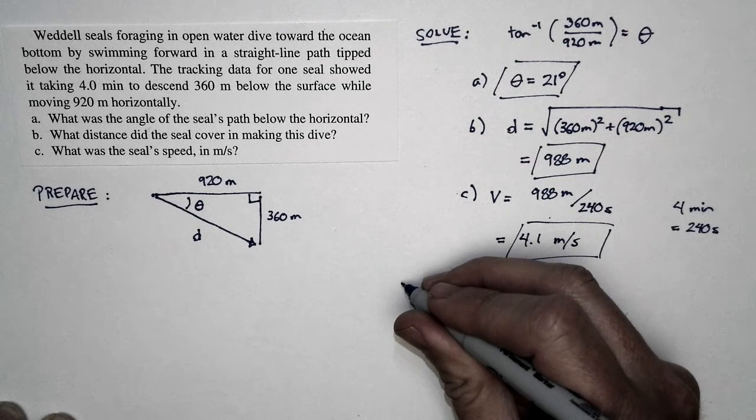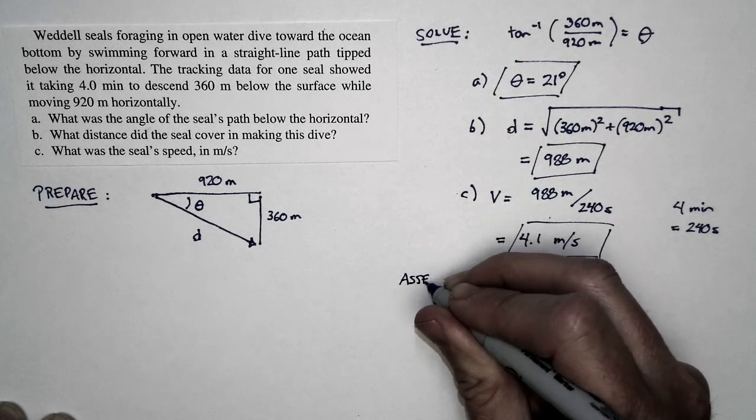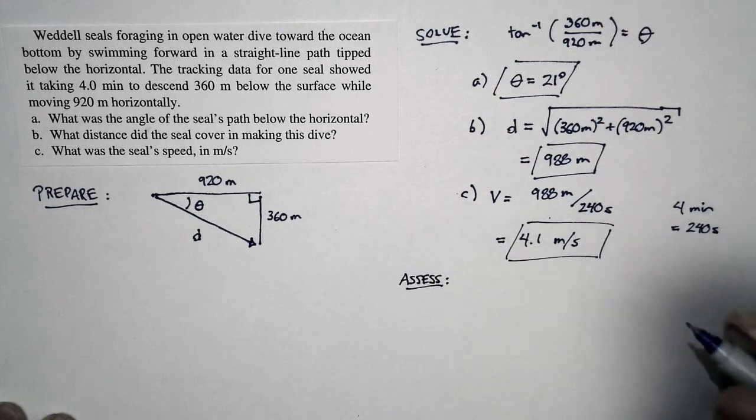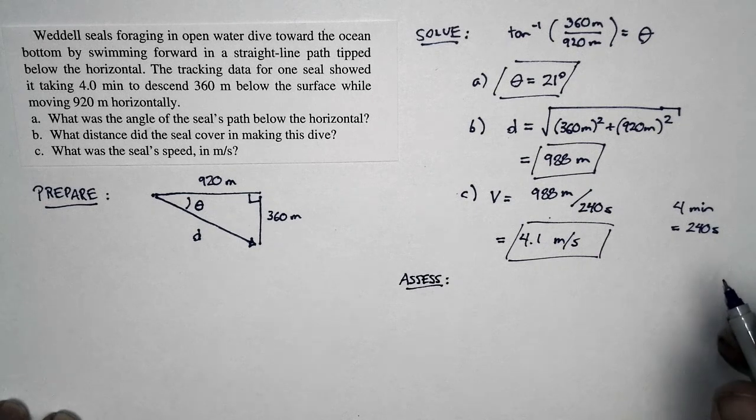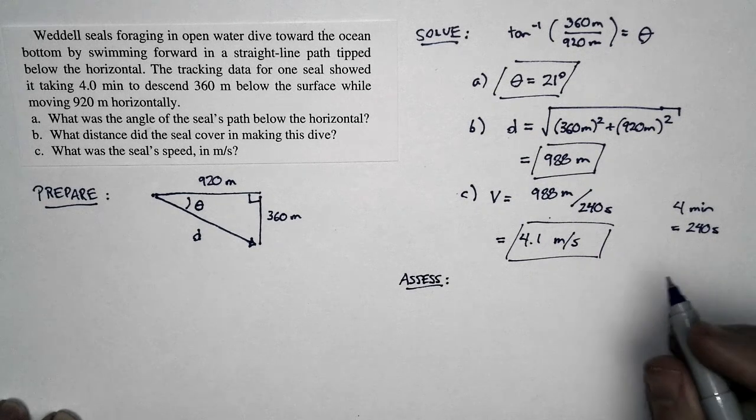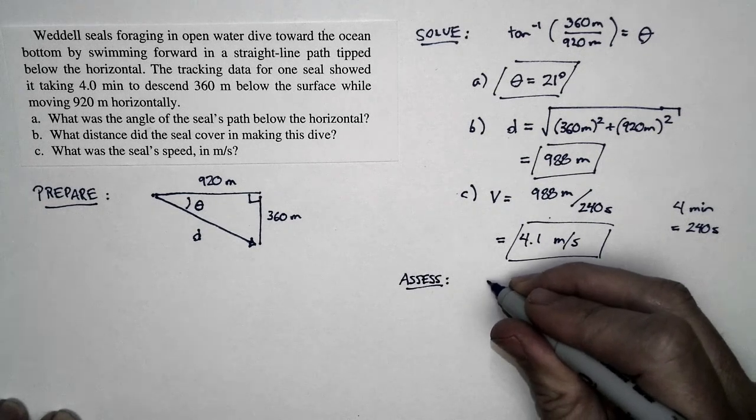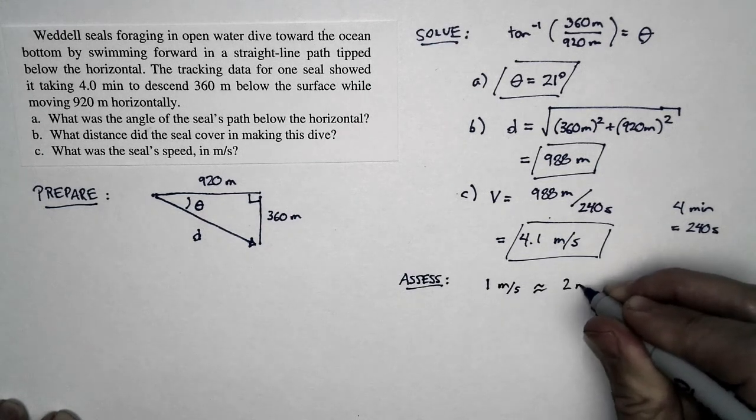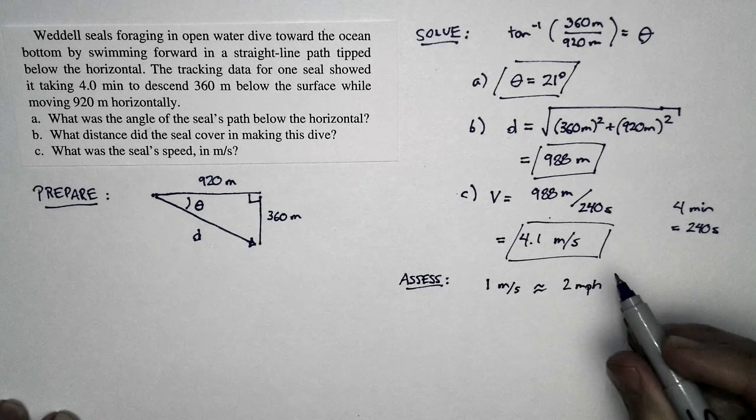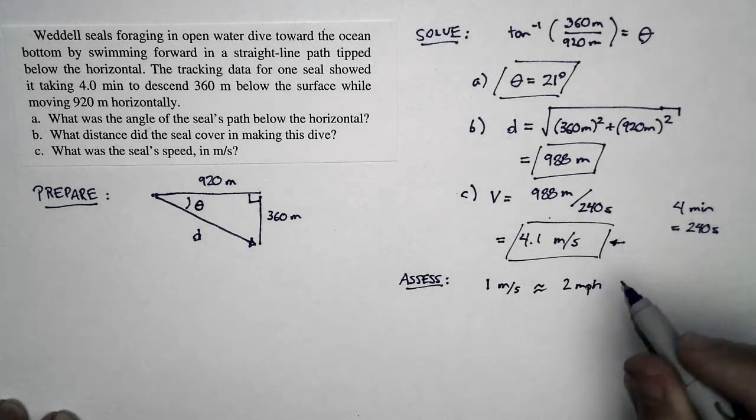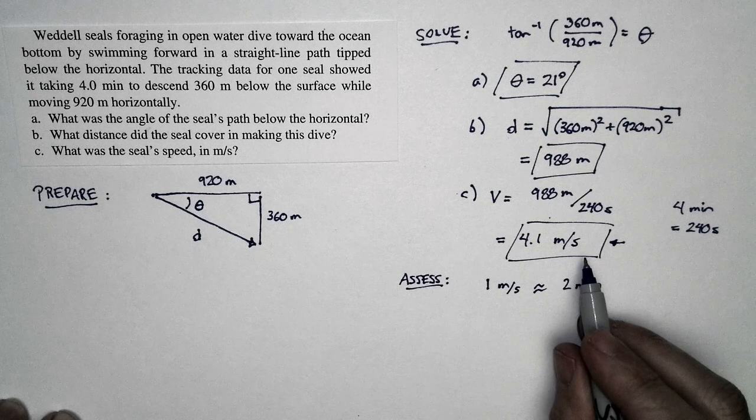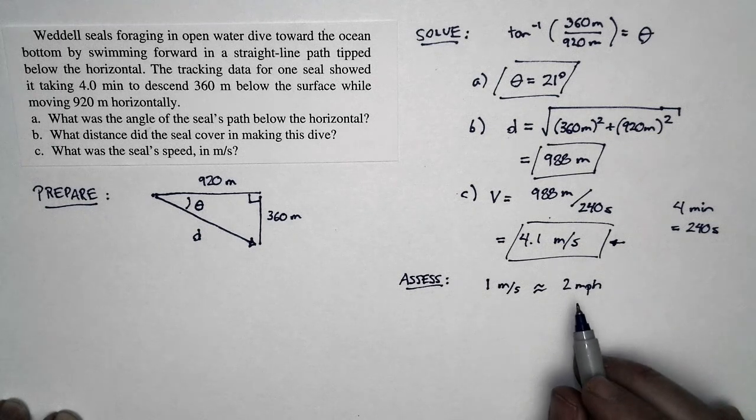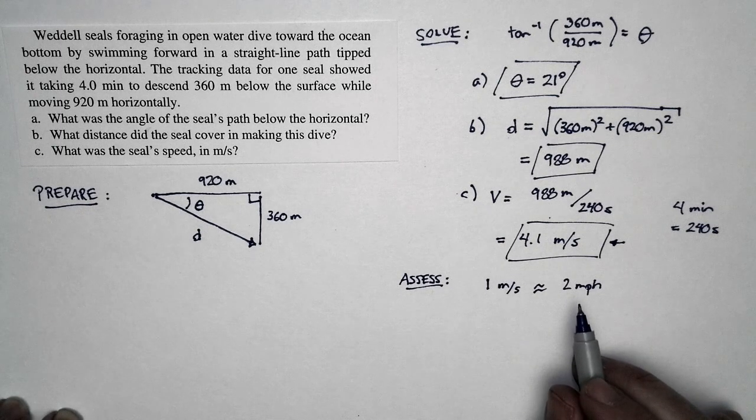Now let's do an assessment. We learned in chapter one some order of magnitude estimates that we could make. One of the things that we said is that one meter per second is approximately equal to two miles per hour. So if the seal is moving at 4.1 meters per second, that corresponds to a speed of about eight miles per hour.